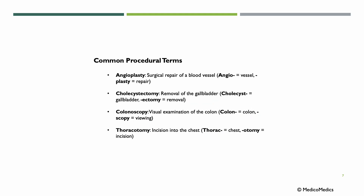Some common procedural terms include angioplasty, surgical repair of a blood vessel — 'angi' means vessel, with the combining vowel O. Cholecystectomy is removal of the gallbladder — 'cholecyst' is gallbladder, 'ectomy' is removal. Colonoscopy is visual examination of the colon. Thoracotomy is incision into the chest.